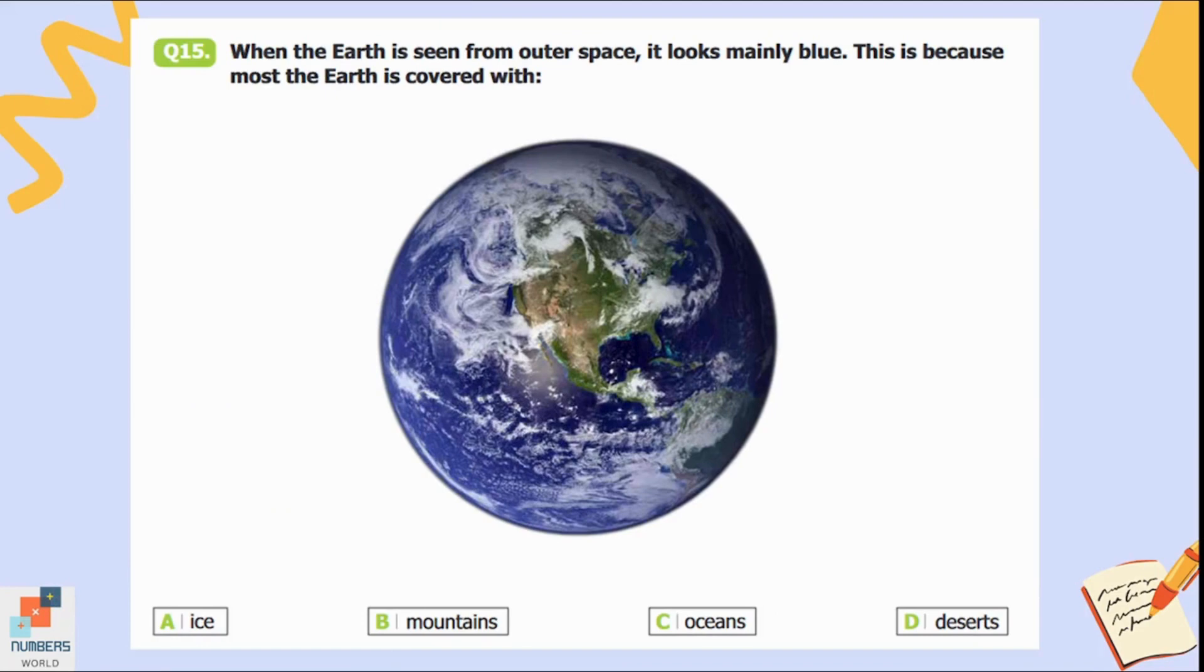Question number fifteen: When the Earth is seen from outer space, it looks mainly blue. This is because most of Earth is covered with ice, mountains, oceans, or deserts. We all know the color of ice is white, mountains and deserts are brown color, and water is blue color. So most of the Earth is covered in water which is in the form of ocean water, so option C is the correct answer.